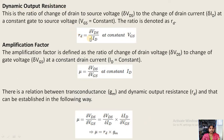Dynamic output resistance rd is the ratio of change in drain-to-source voltage to change in drain current, keeping VGS constant: rd = dVDS/dID at constant VGS. The amplification factor Mu is defined as the ratio of change in drain-to-source voltage to change in gate-to-source voltage, keeping drain current constant: μ = dVDS/dVGS at constant ID.